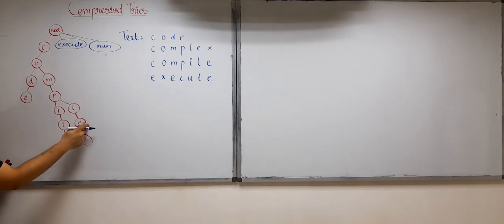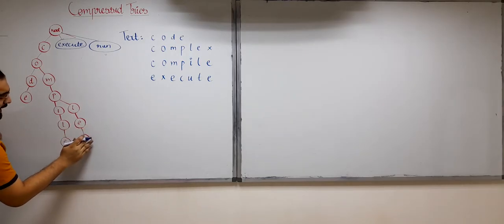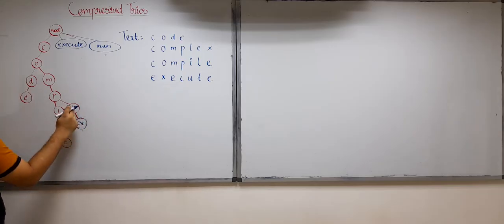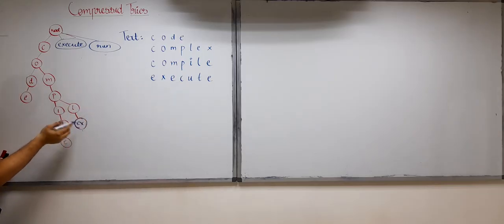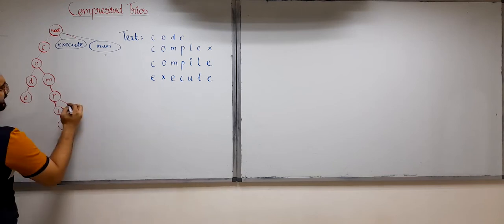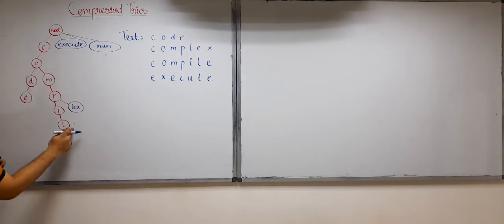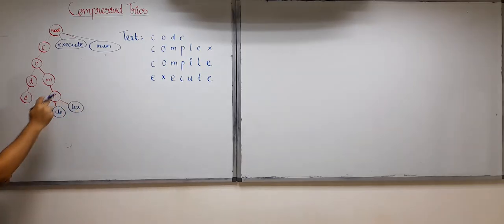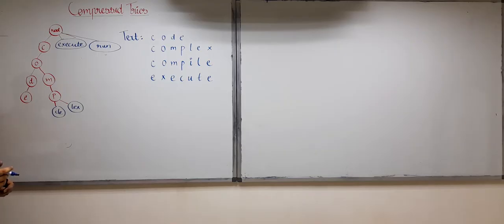For the other branch, E has just one child X, so we collapse to get EX. Then L has just one child EX, so we get LEX. Similarly, L has just one child E giving LE, and then we get ILE. We do not collapse ILE or LEX into P because P already has two children — the property of compressed tries is satisfied.